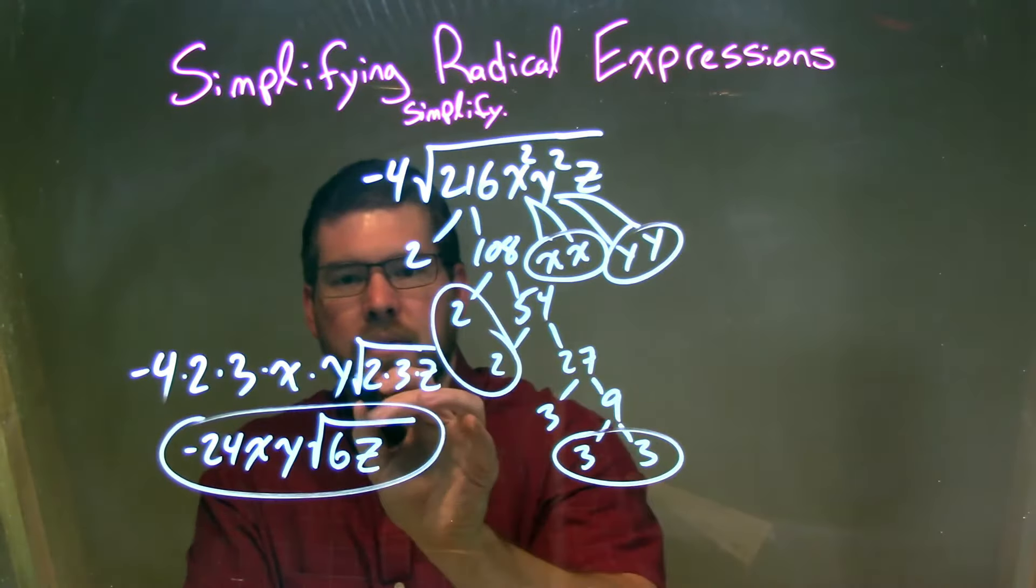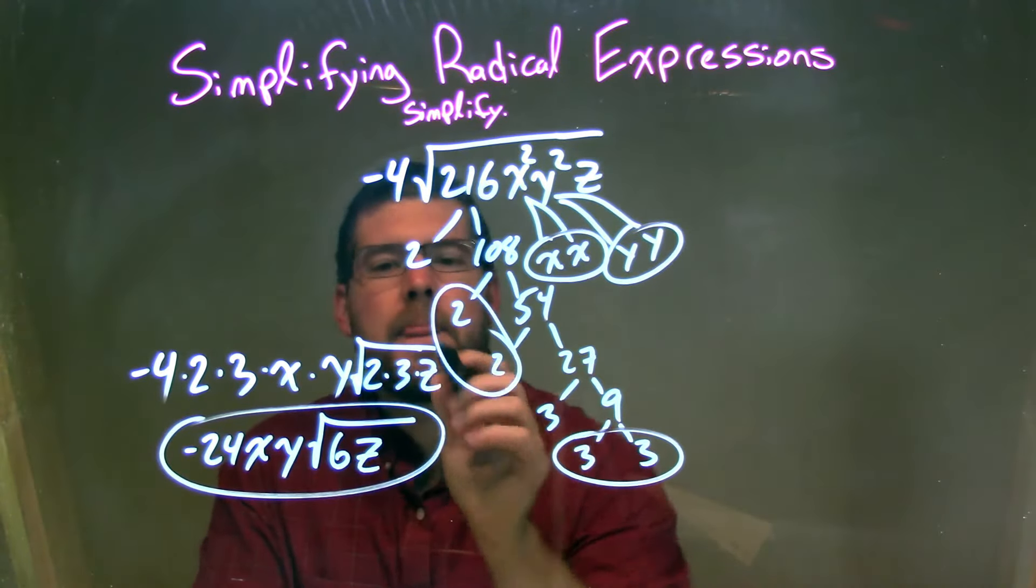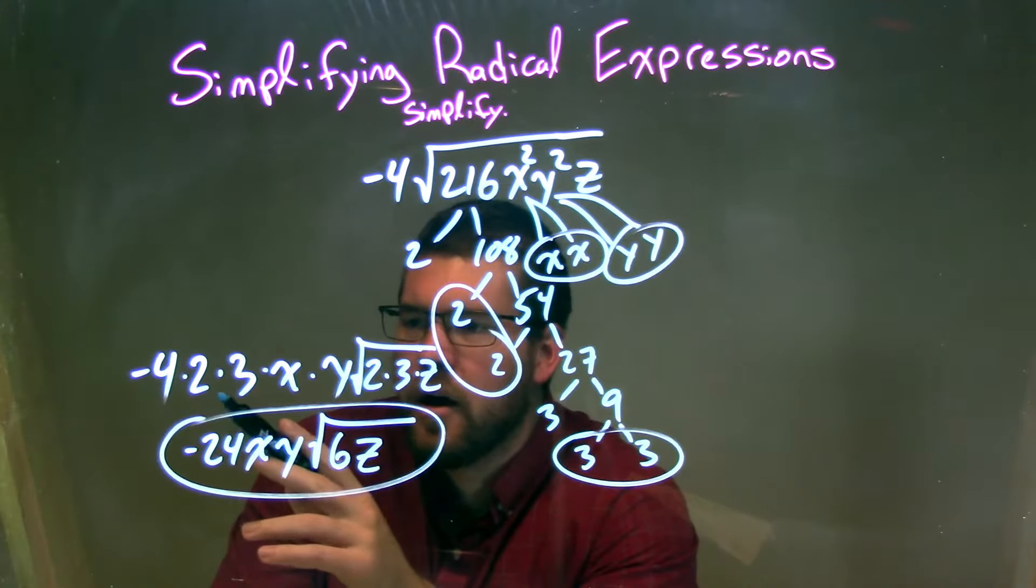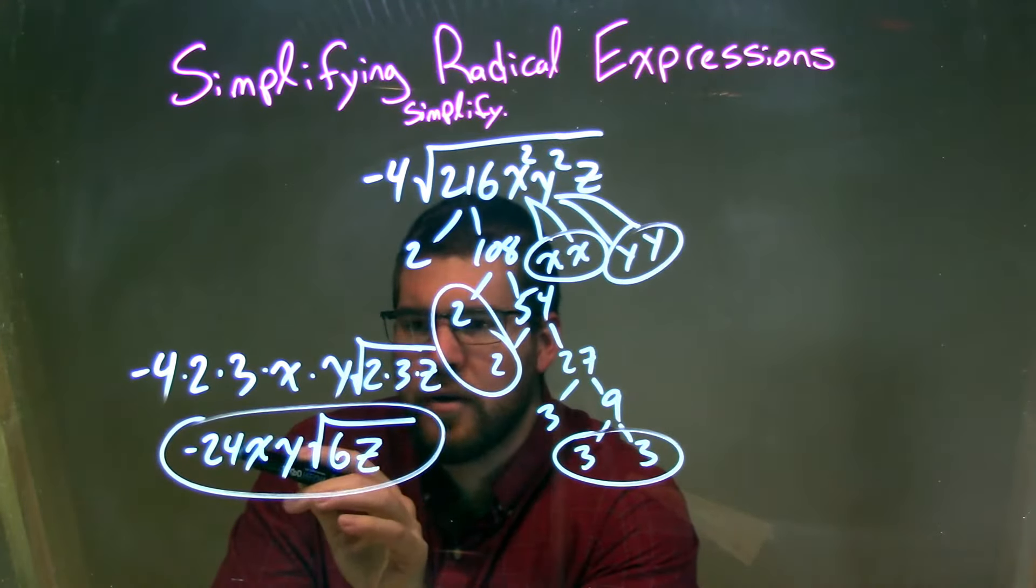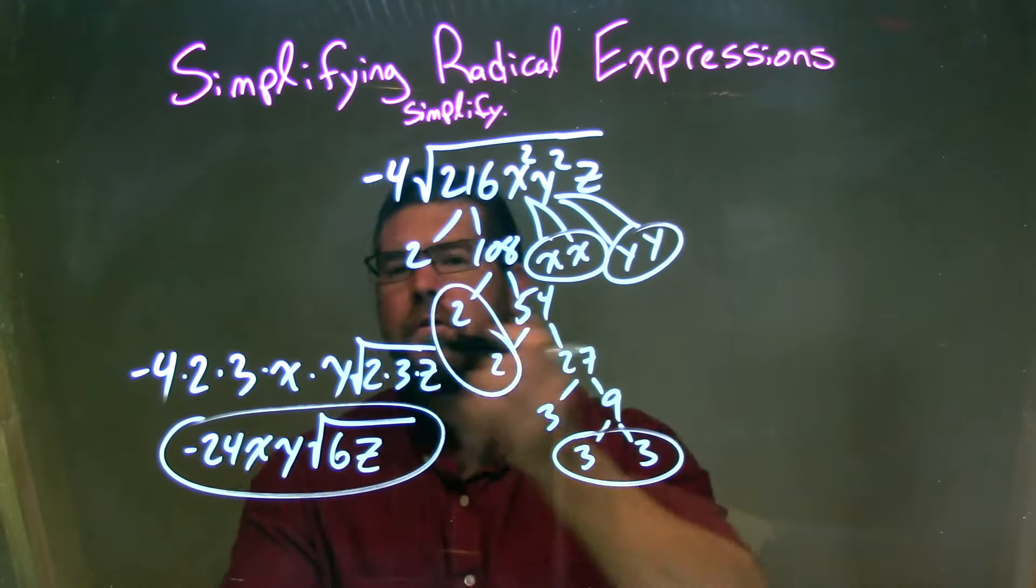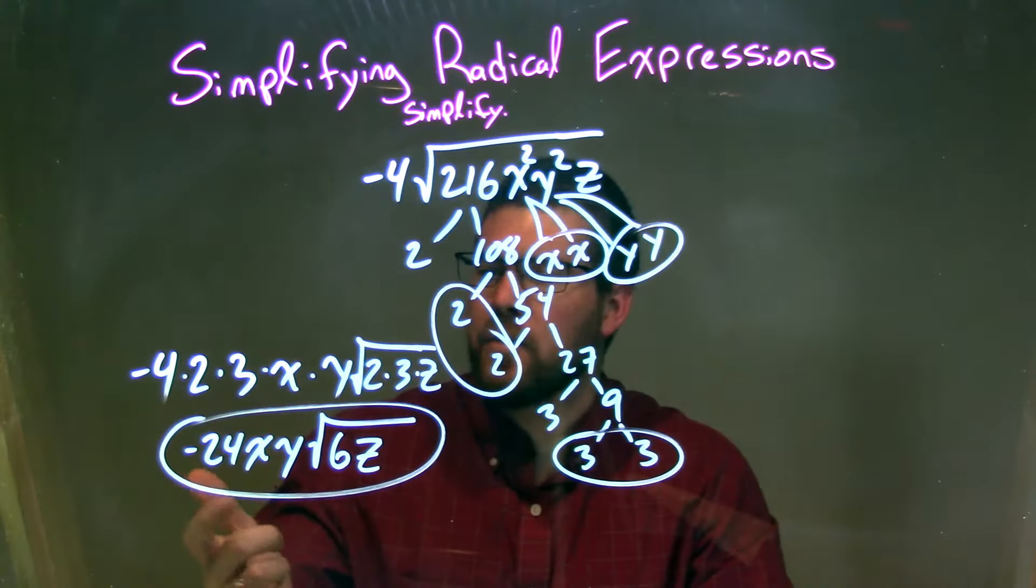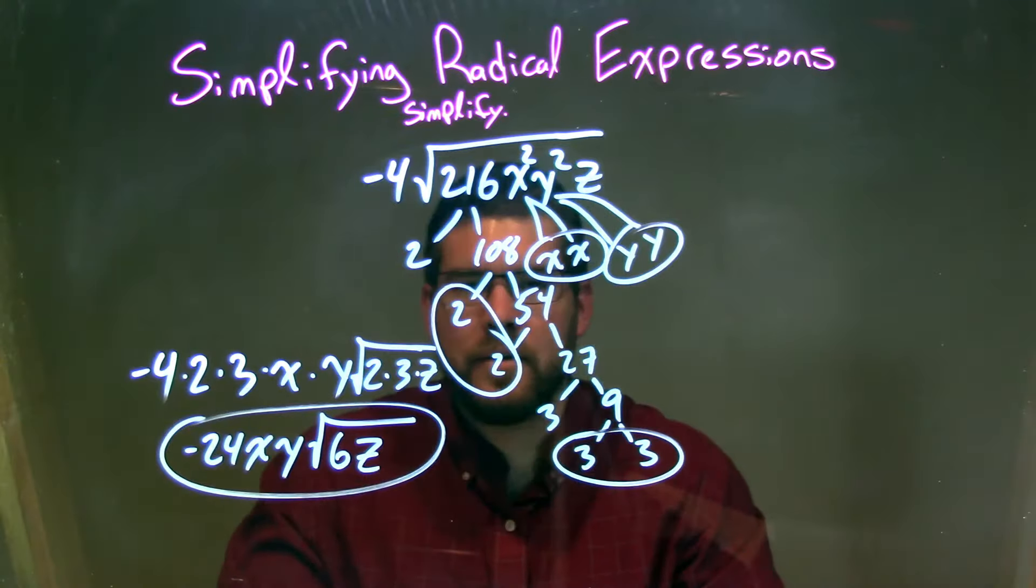Don't forget the z. And then we simplify. So we simplify here now. Negative 4 times 2 times 3 is negative 24. And 2 times 3 is 6. So our final answer here of the most simplified version is negative 24xy times the square root of 6z.